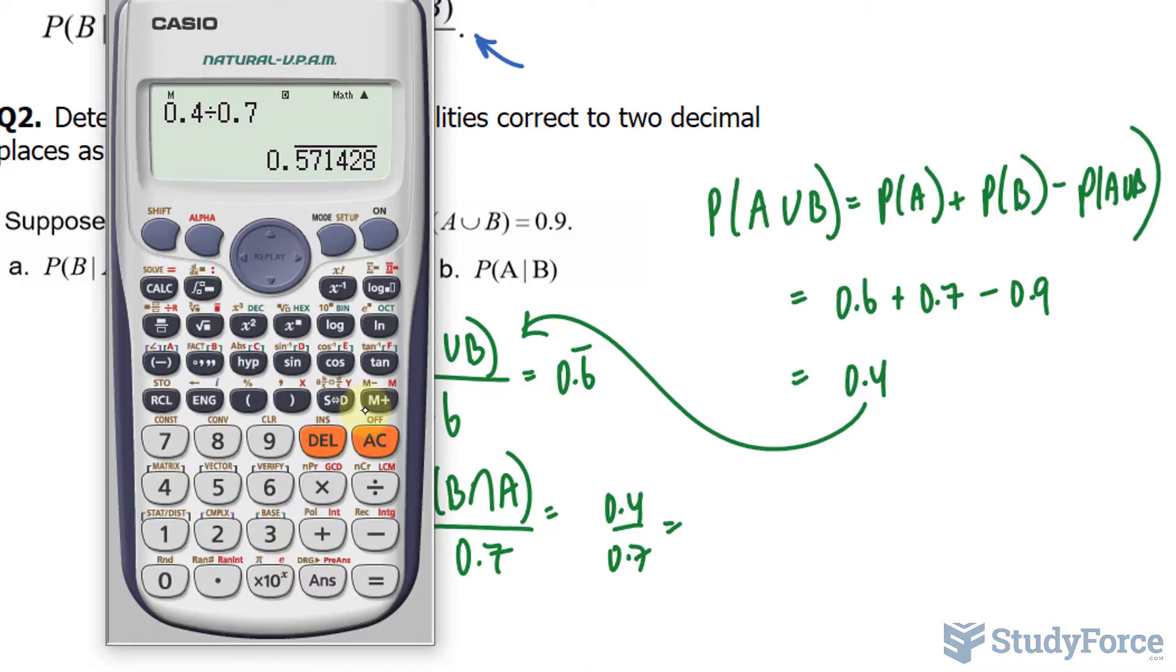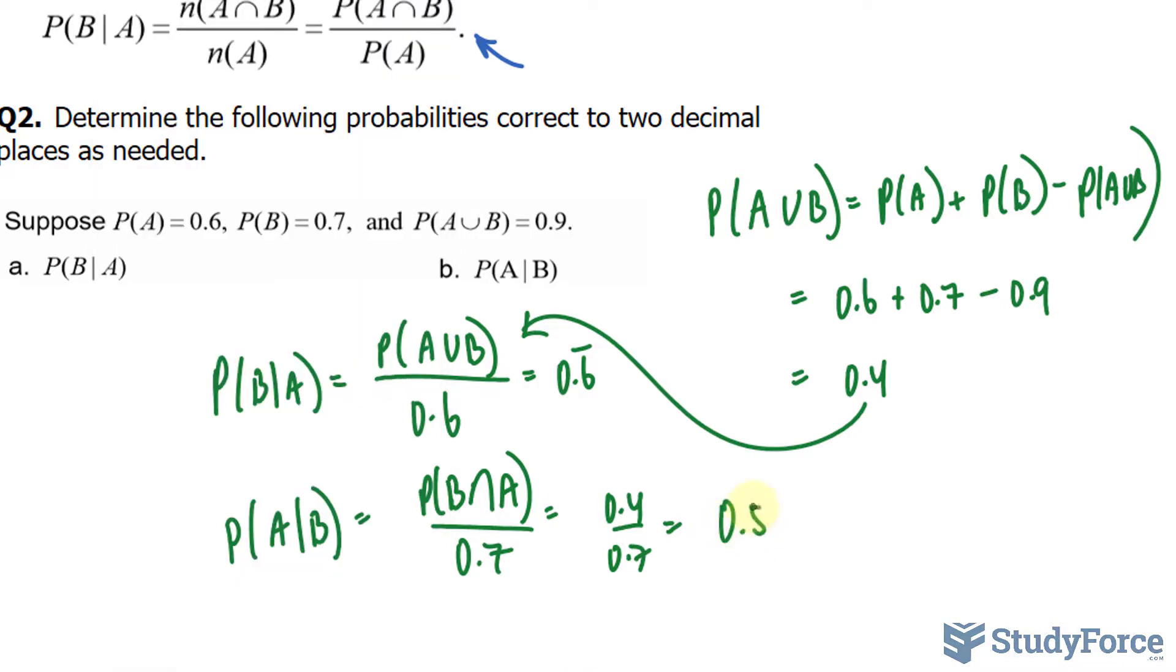That gives us 0.57. That's to two decimal places, and that's the answer.